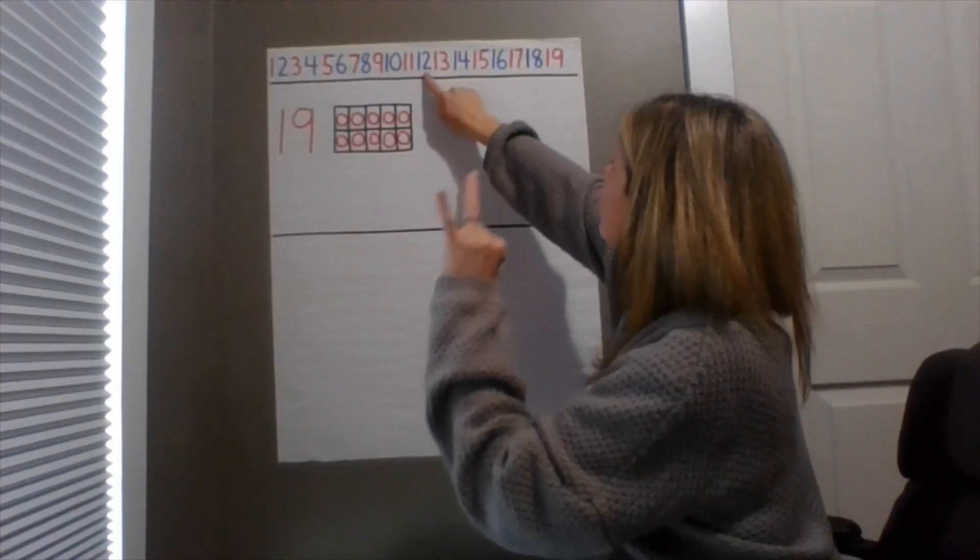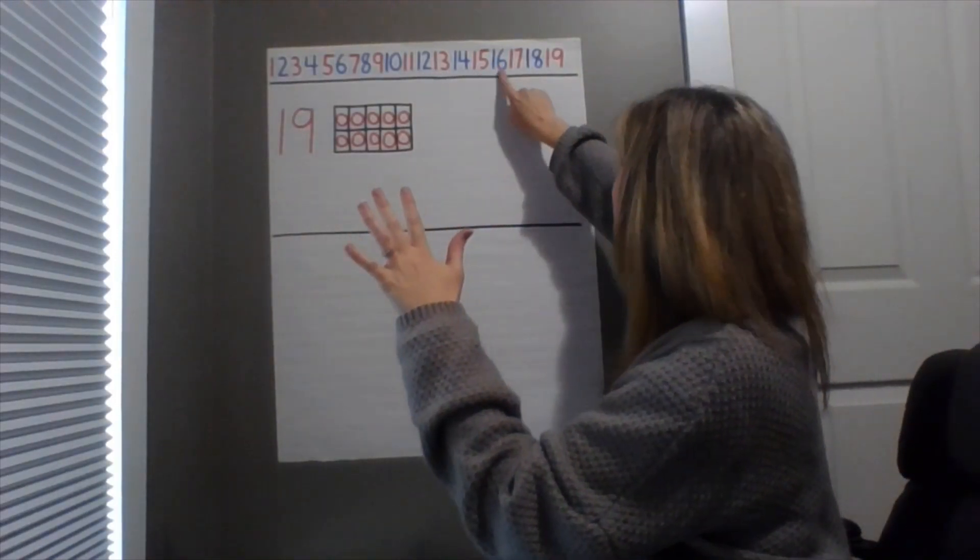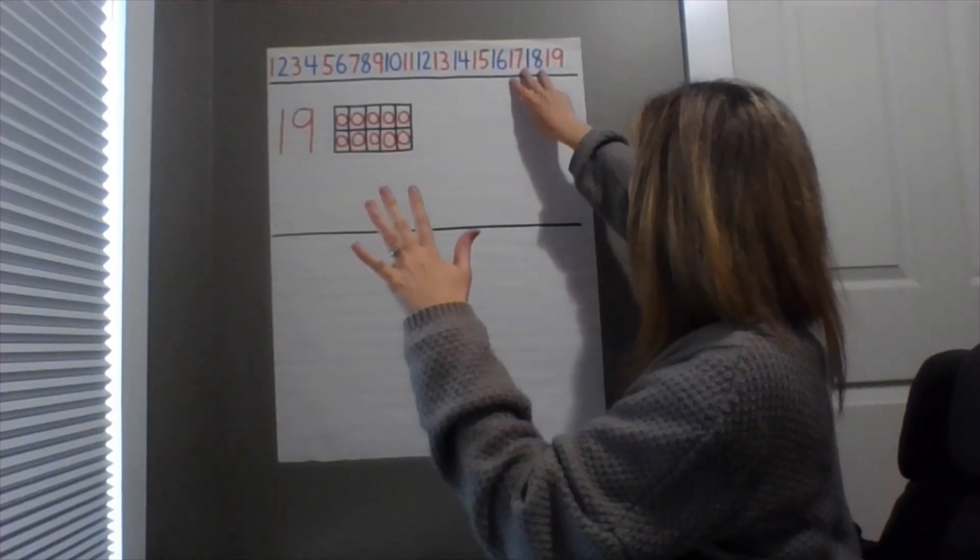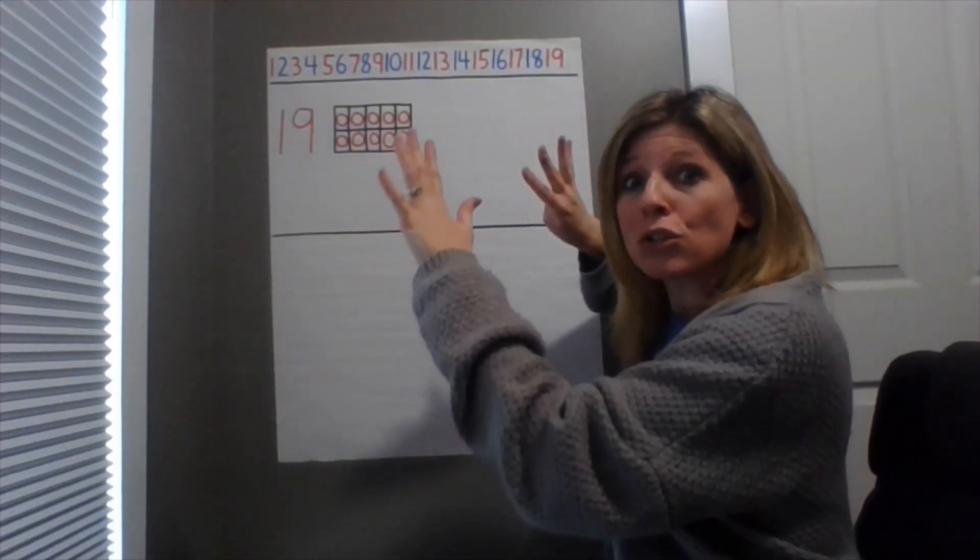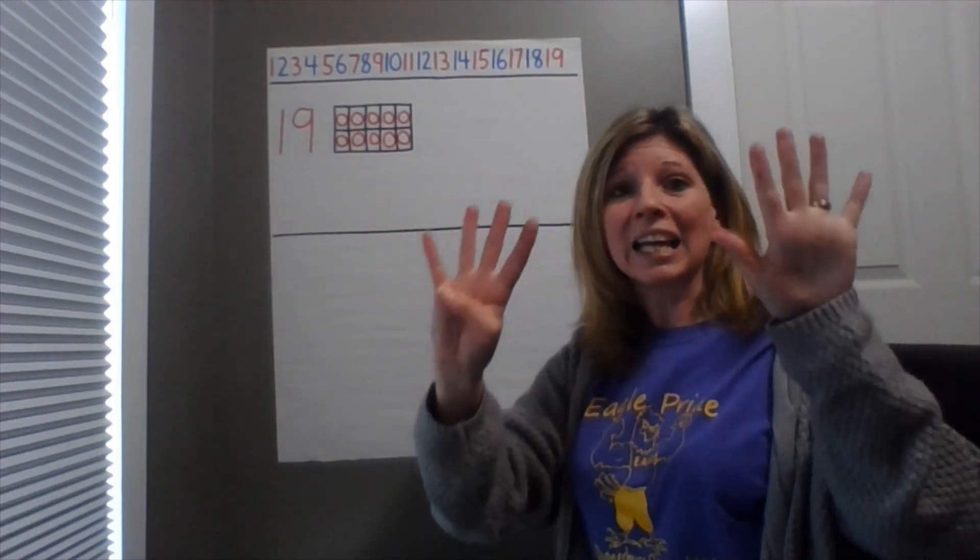Then we add 11, 12, 13, 14, 15, 16, 17, 18, 19. So now I have 19. So I added nine more.